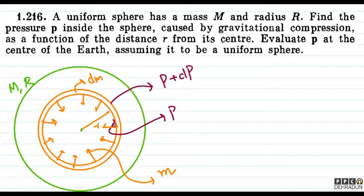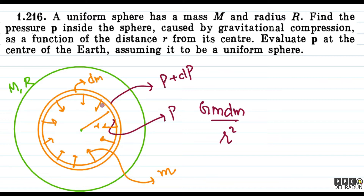Andar ki taraf force lagne ka ek karan hai gravitational attraction. Woh ho jayega G times small m times dm upon r square. Bahar ka jo mass hai, woh is shell ko nahi kheench raha, kyunki bahar ke shells ke liye ye shell ek internal point hai, isliye woh koi field create nahi karenge aur koi force nahi lagayenge. Toh gravitational force sirf exist kar raha hai between this inner solid sphere of mass small m and the shell. So G m dm upon r square andar ki taraf lagne wala force ka magnitude ho gaya.